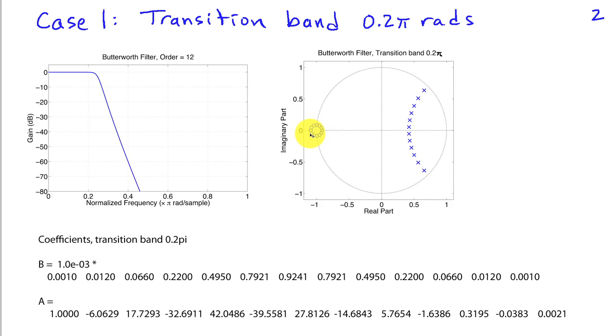We should have 12 zeros located at z equals minus 1. But because of the coefficients being in limited precision, we end up with zeros that are not exactly located at z equals minus 1, but are in that vicinity. So we're on the edge of numerical problems with this particular design, even though it does appear to satisfy the specifications.